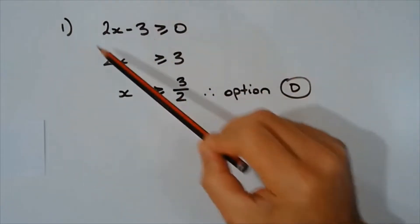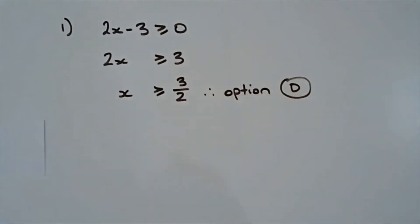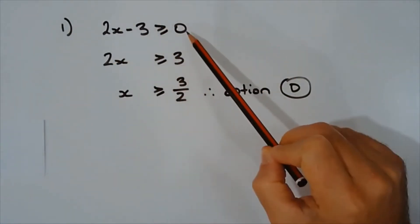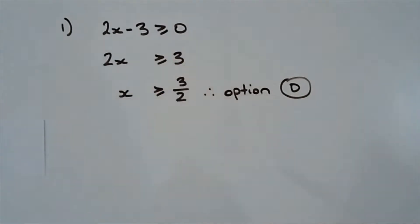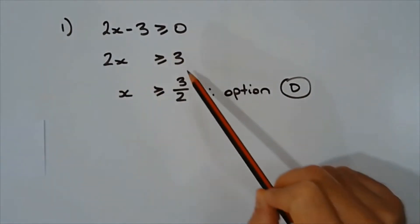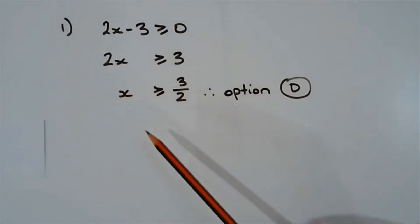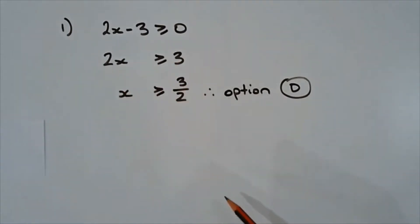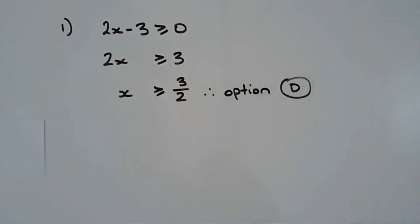Solving this inequality and making x the subject, we'll add 3 to both sides — no need to switch the inequality sign. So we have 2x is greater than or equal to 3. Dividing both sides by 2, we have x is greater than or equal to 3 over 2. Therefore the answer is option D.